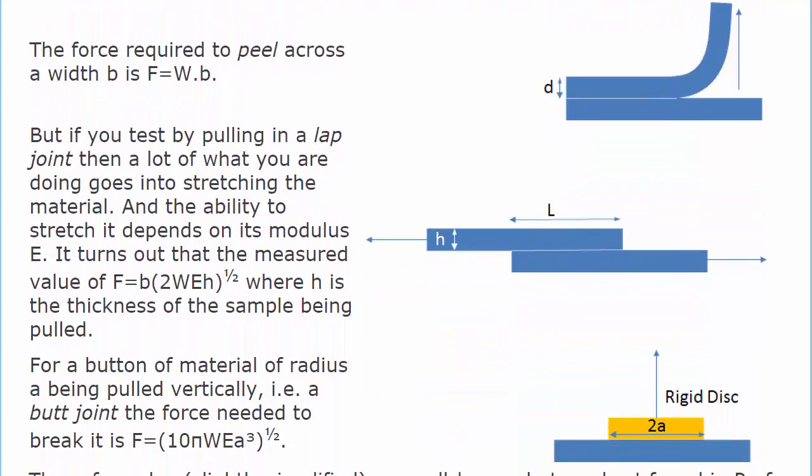We have here the same rubber pulled apart in three different ways. First as a peel, second as a lap joint, and third as a butt joint with a rigid pull upwards. The dimensions are all designed to be the same for these three joints.